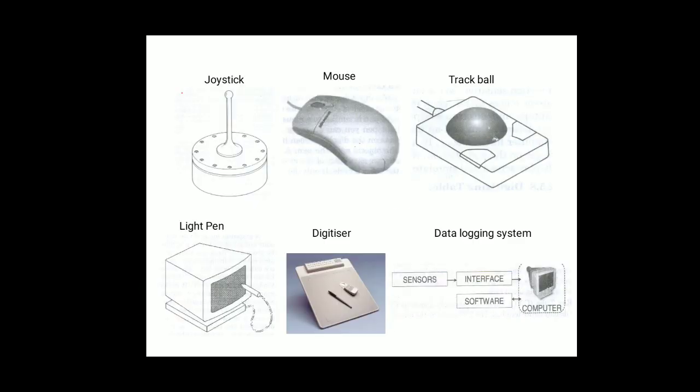A mouse is a handy device which can be moved on a smooth surface to cause the movement of the cursor on screen. It is a pointing device used to input data and information into the computer. There are three types: mechanical mouse, optical mouse, and wireless mouse.